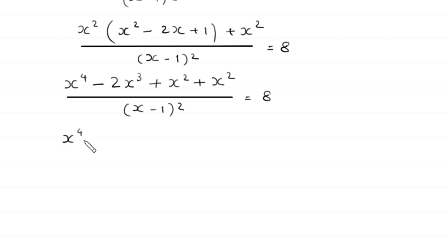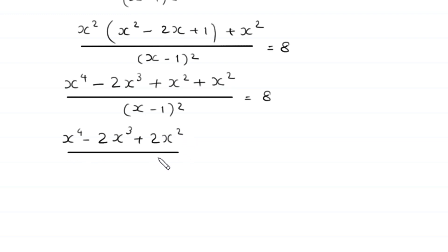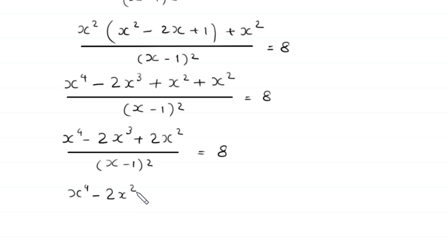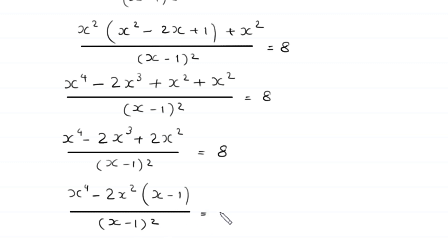Collecting terms: x to the power 4 minus 2x cubed, and the two x squared terms combine to give plus 2x squared, all divided by (x minus 1) whole squared, equals 8. From the terms negative 2x cubed plus 2x squared, we can factor out 2x squared, giving x to the power 4 plus 2x squared times (x minus 1), divided by (x minus 1) whole squared, equals 8.